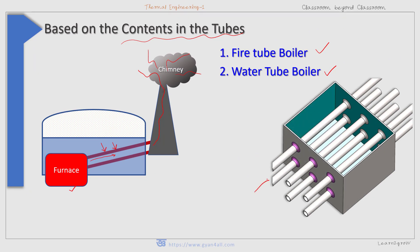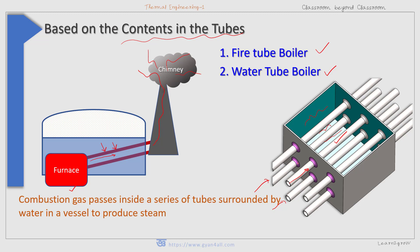There may also be tubes where the content inside is water, and this water absorbs heat from the surrounding tubes through which hot gases pass. In fire tube boilers, combustion gas passes inside a series of tubes surrounded by water in a vessel to produce steam. It may not be a series of tubes — it may be a single big tube or many tubes.